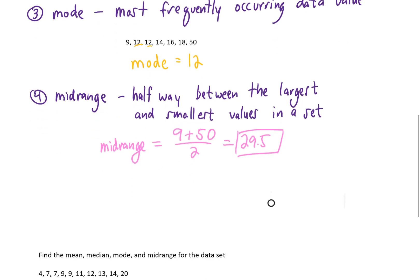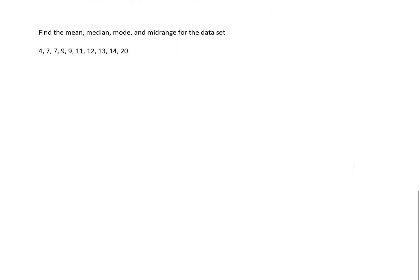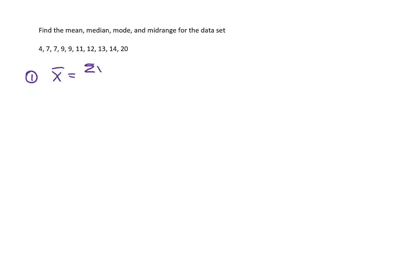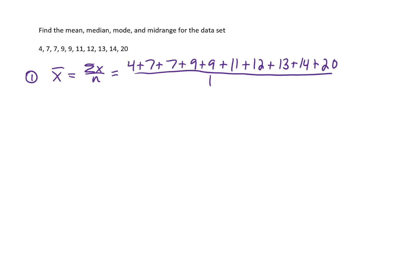Let's find all of those measures of center for this data set and see what complications we run into. First, let's find our mean. To find the mean, we sum all of our data values and divide by the total number of data values. I'm counting 10 data values total and getting 106 for our sum. Dividing by 10, we get 10.6 as our mean.